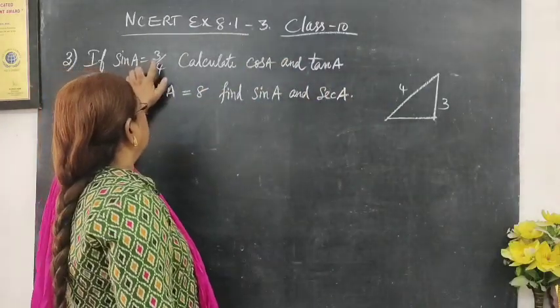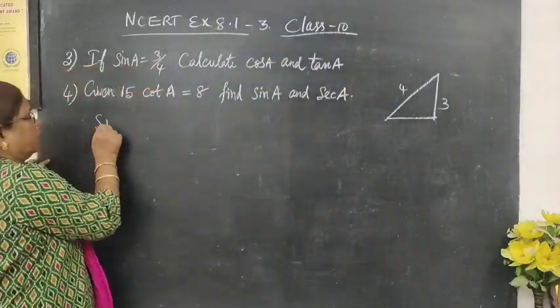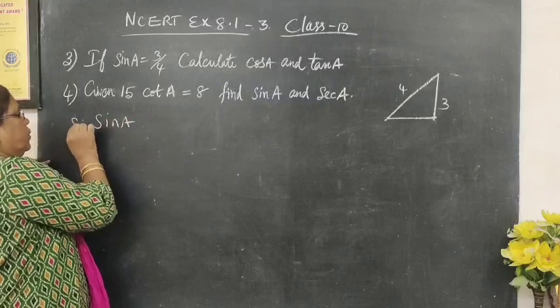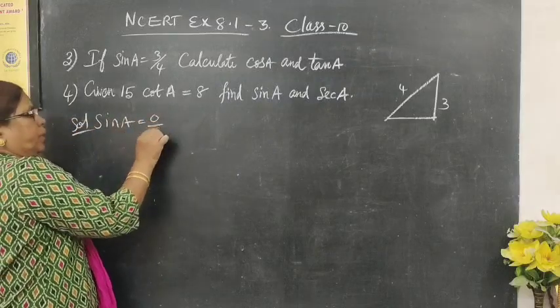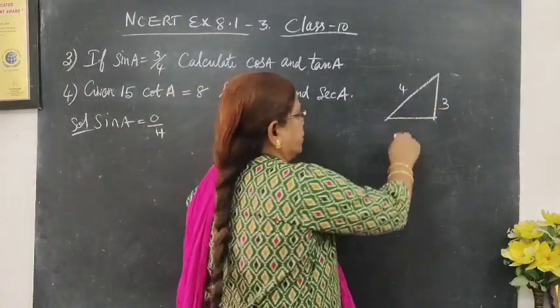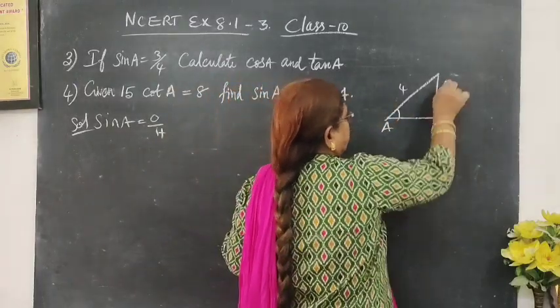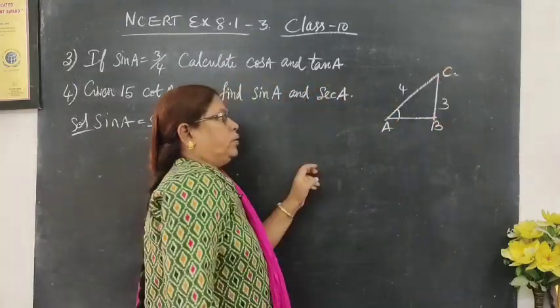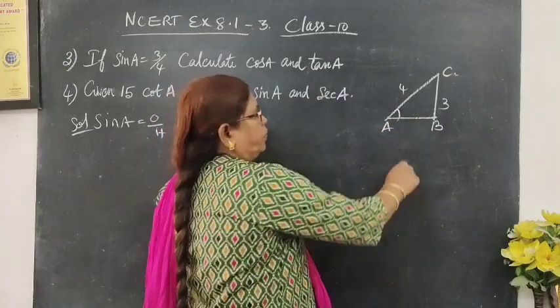Sin A is opposite by hypotenuse. Sin A equals opposite by hypotenuse. Opposite is C. This is A, B, C. Then hypotenuse 4. You want to find AB.